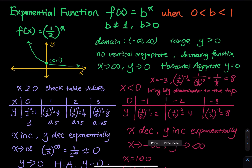An exponential function is b raised to the x power, where b is the base and x is the independent variable. By definition, b must be greater than zero and the base cannot equal one, because one raised to any power is always one, making x meaningless. In the previous video we used f(x) = 2^x. In this video, we look at what happens when the base is between zero and one.